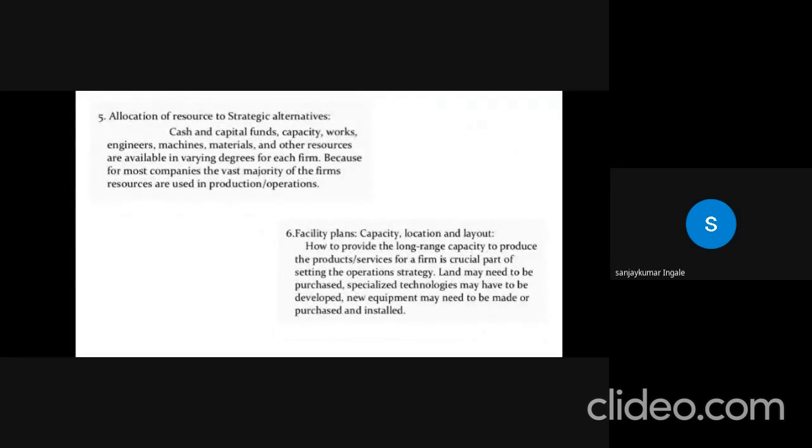Fifth, accumulation of resource to strategic alternatives. Cash, capital funds, capacity, works, engineers, machines, materials and other resources are available in varying degrees for each firm. Because for most companies, the vast majority of the firm resources are used in production and operation.